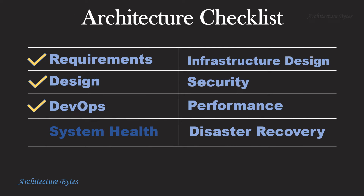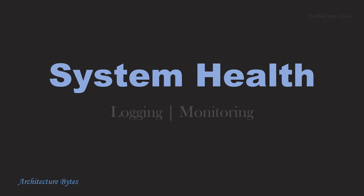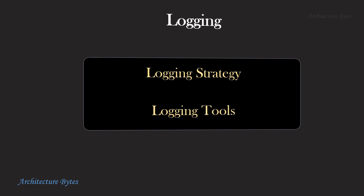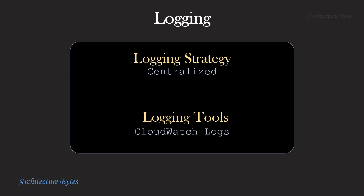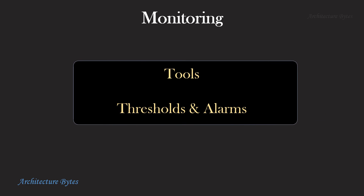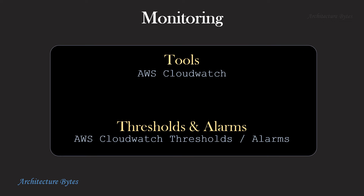System Health. For logging, we will identify a logging strategy and tools to use. Our logging strategy is centralized logging, whereby all application components send their logs to a centralized location. Since we are on AWS, we can use CloudWatch Logs for this. For monitoring, we will identify the tools and any thresholds and alarms we need to set. We can use AWS CloudWatch for this and set alarms using it.